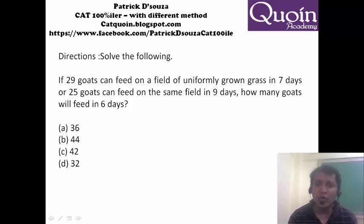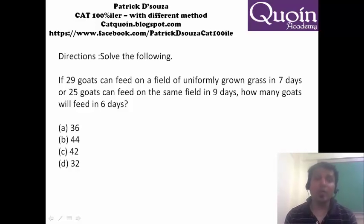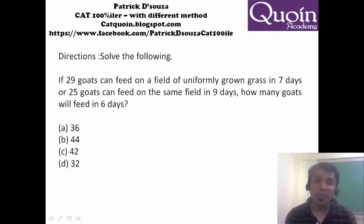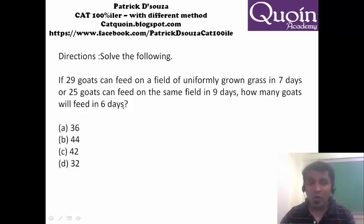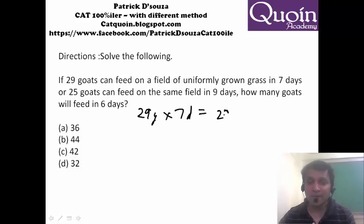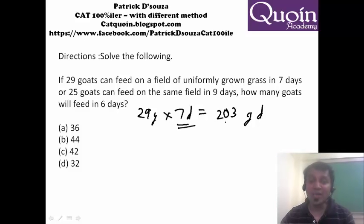I explained: if there was no uniformly grown grass, the sum was very simple. But since there is uniformly grown grass, you have to look at that aspect. How do I find out the uniformly grown grass? First I look at the options — there is not much the options can do in this particular sum. So I go back and focus on the grown grass. If I have 7 days, 29 goats times 7 days comes to 203 goat-days. That means in 7 days, we have grass equivalent to 203 goat-days.